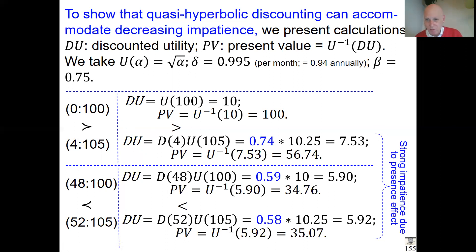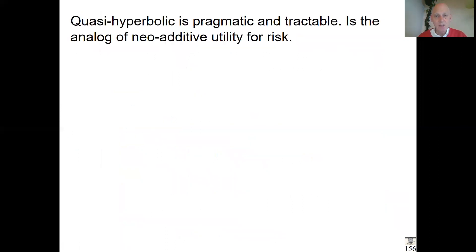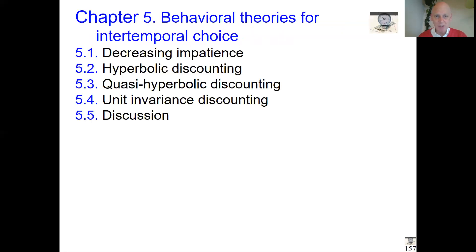This model is very pragmatic and tractable. It's comparable to the neo-additive utility model for decision under risk, which also captured the main effect—certainty factor and possibility factor—but similarly in spirit: the main effect, simple, linear, nothing else, easy to work with. People like it a lot. Quasi-hyperbolic is most popular for this type of choice. Next family coming, but that will be continued later.